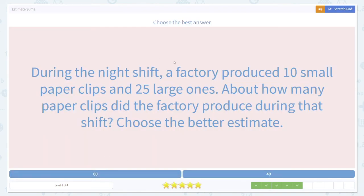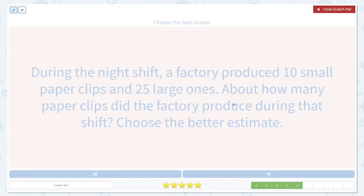During the night shift, a factory produced 10 small paper clips and 25 large ones. About how many paper clips did the factory produce during that time? Again, we need to estimate the total. We can tell two ways. First, it asks us explicitly for a better estimate. But it also says about how many.